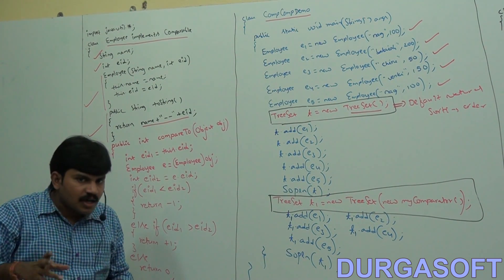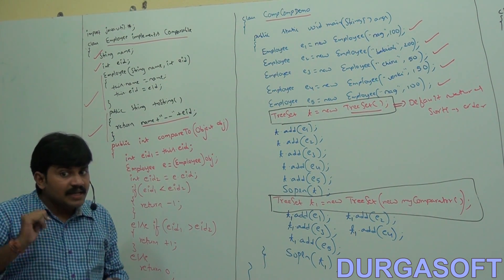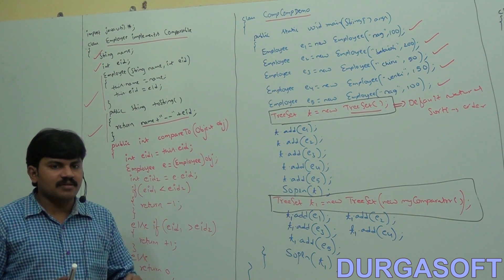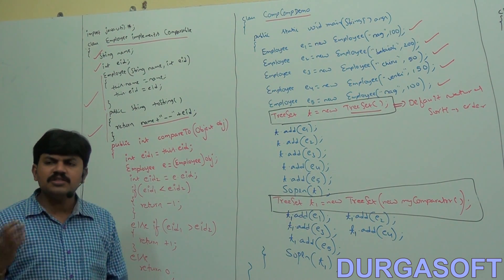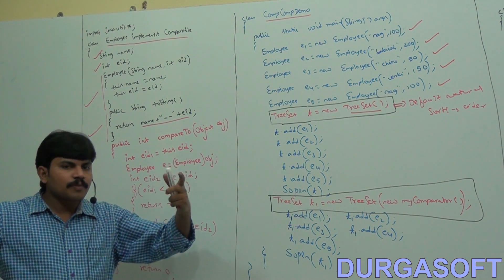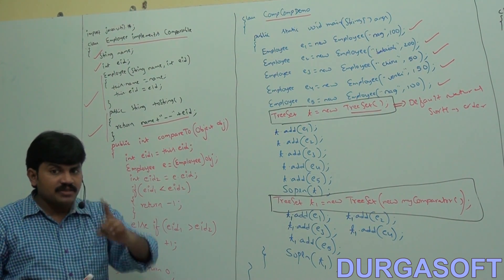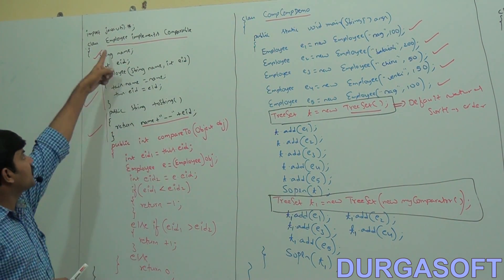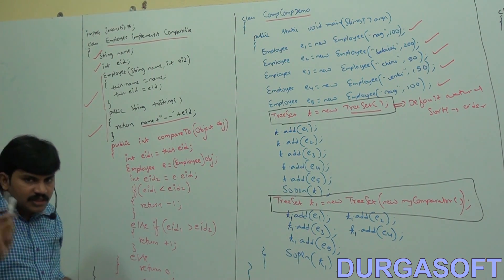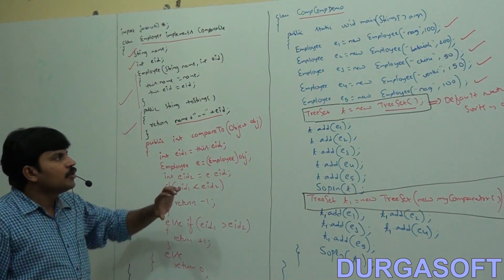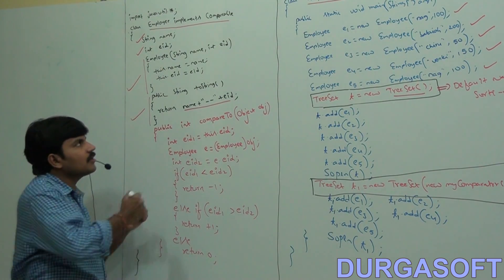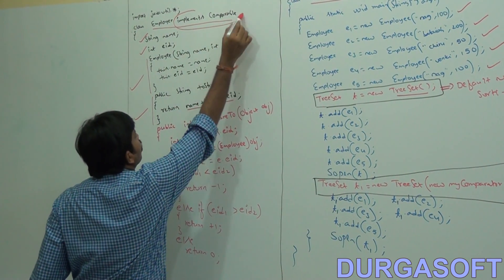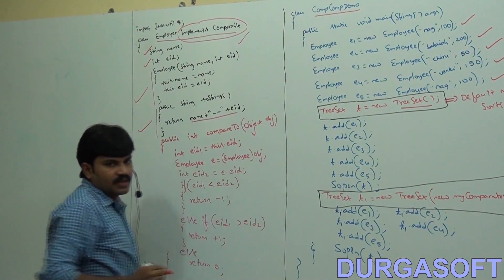For the Employee class, what is commonly required sorting — based on name or based on ID? Based on ID, because duplicate names are possible but duplicate IDs are not. That's why, in general, the commonly required sorting for Employee is based on ID.